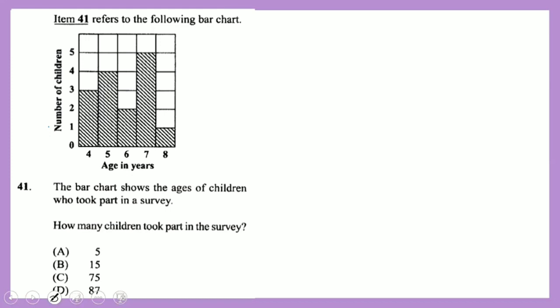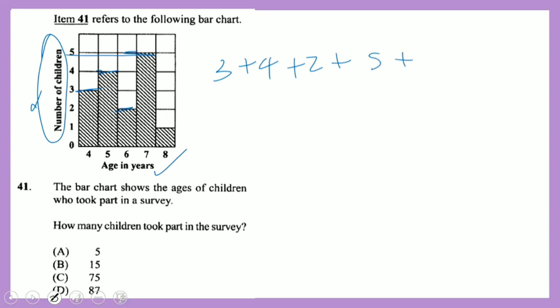Question 41: a bar chart shows the ages of children who took part in a survey. To find the total number of children, add up all the bars: 3 + 4 + 2 + 5 + 1 = 15 children.